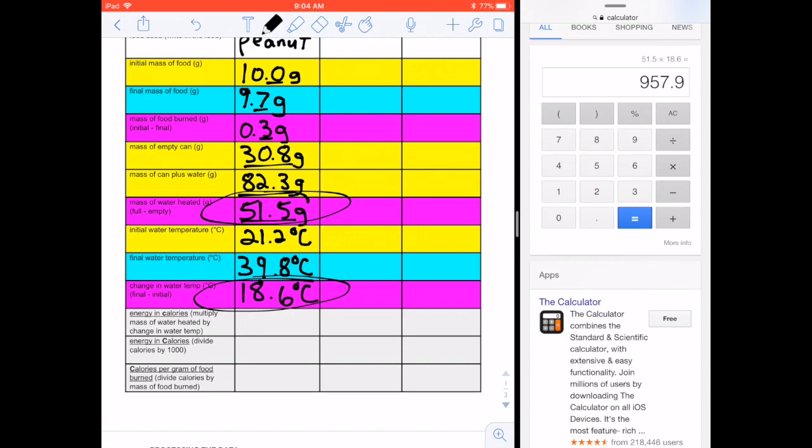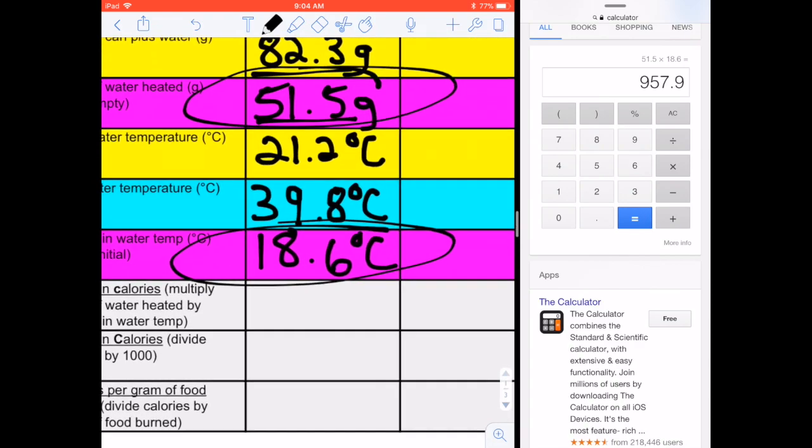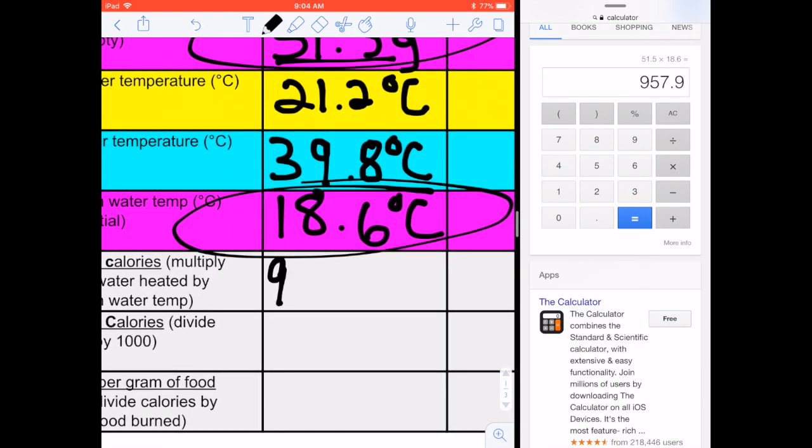Now for significant figures here, it's a multiplication, so I actually just take the total number. So it's three significant figures in each of the two numbers. I'm going to have three in the final answer. So I'm just going to round 957.9 to 958. 958 little c calories.